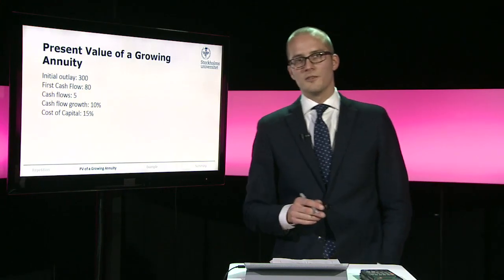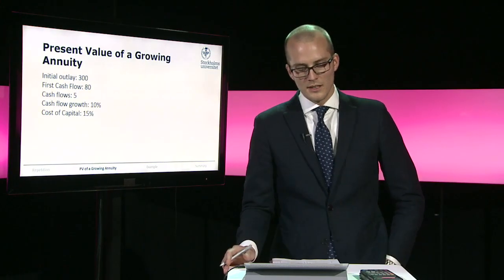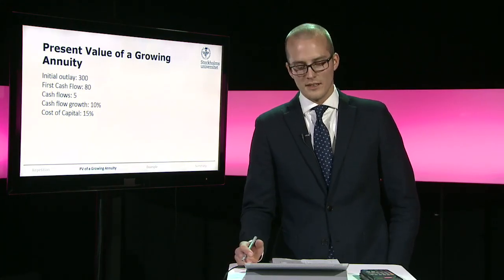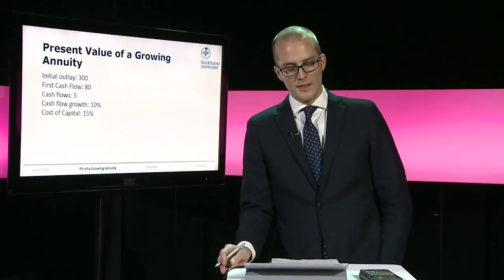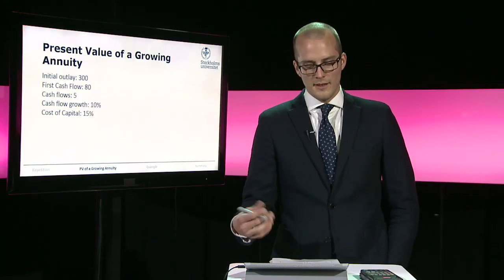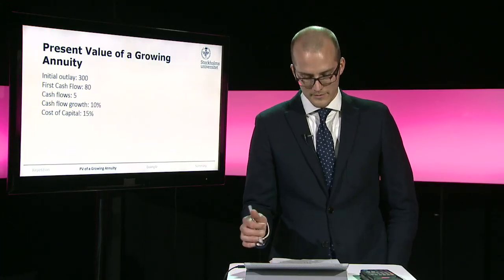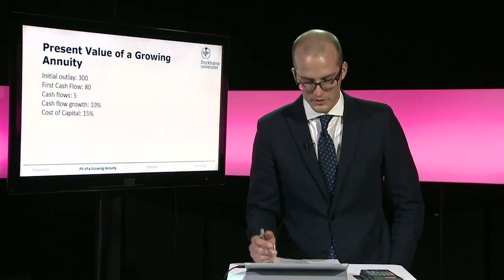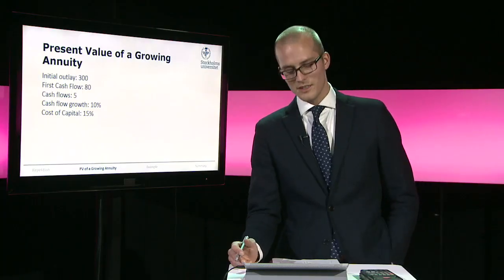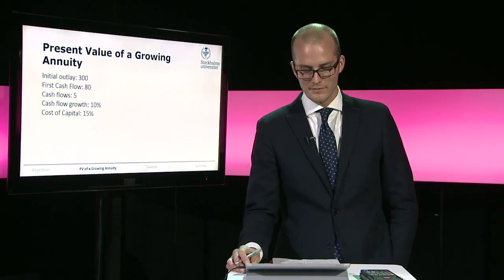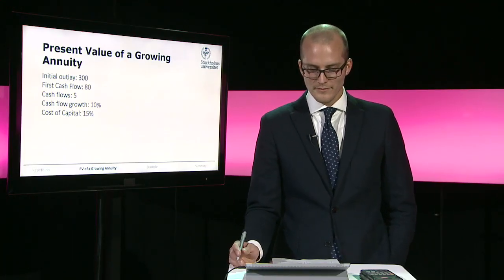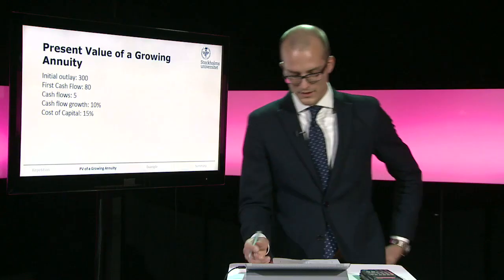Going back to our previous example: we had an initial outlay of 300, and after one year we obtained 80, with a 10% growth between every consecutive cash flow. The cost of capital is 15%, and we have five cash flows. Using the formula, we take the first cash flow of 80, divide by (15% minus 10%), and multiply with the factor (1 minus (1 + 10%) divided by (1 + 15%)) raised to the power of 5.